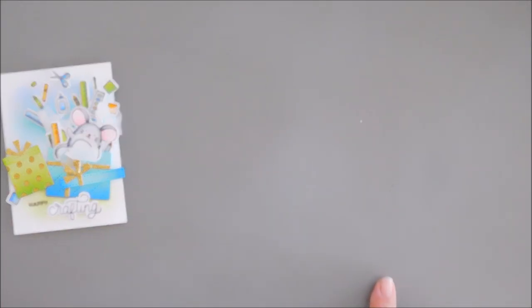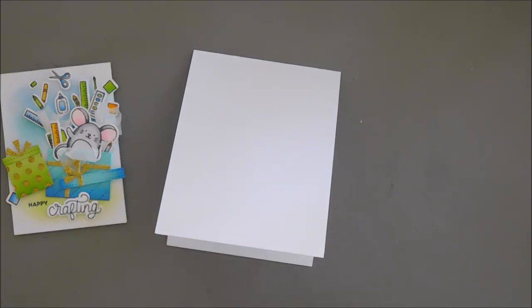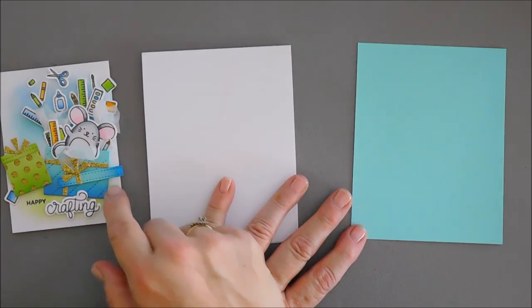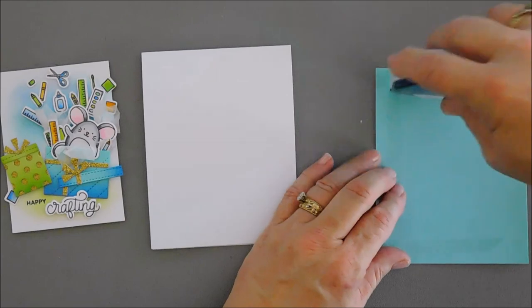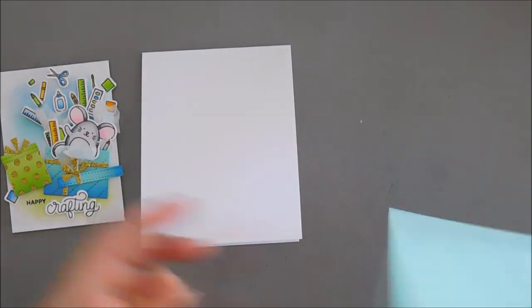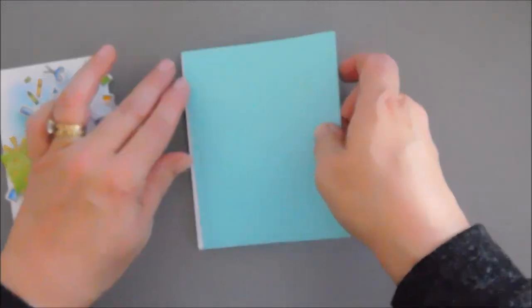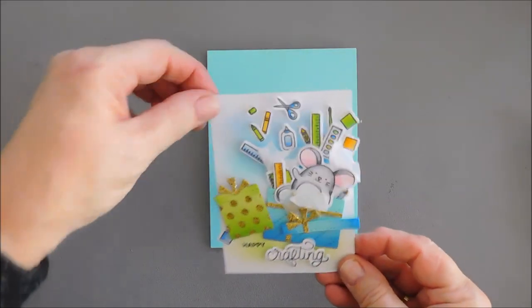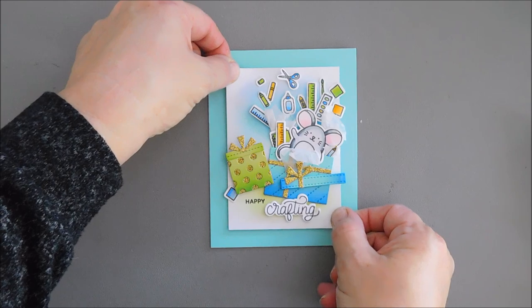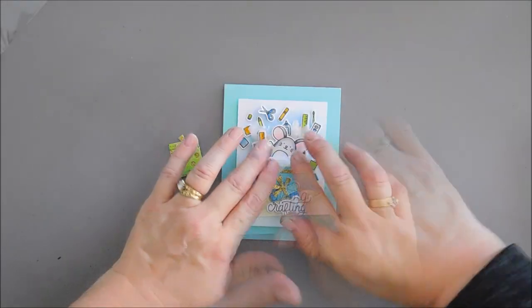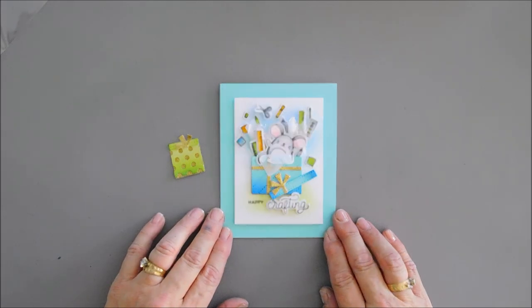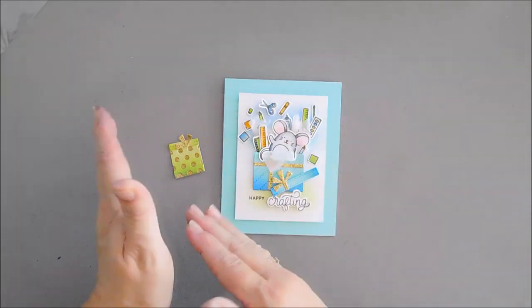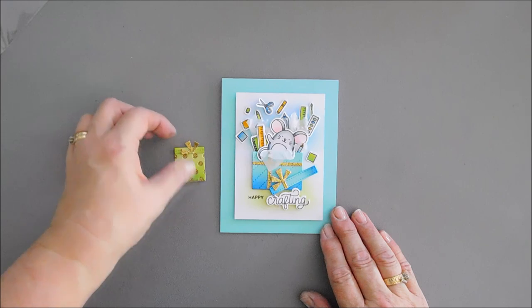Our card base is a standard A2 size card base. And we're going to take some teal colored card stock. It's actually the same color of the present that we blended on. And I'm going to adhere this directly to my card front. It's basically a card front panel. So it measures four and a quarter by five and a half inches. I'm going to remove the release paper off the back of my panel here. And we're just going to place this in the center of our card base. After I did all my arranging and placing my sentiment, I decided, I readjusted everything from this end to this end.